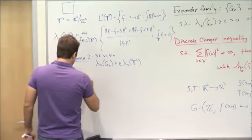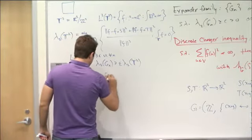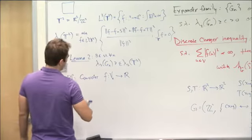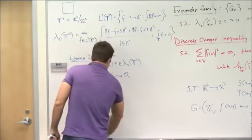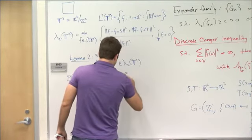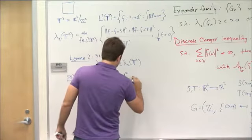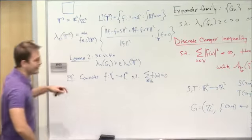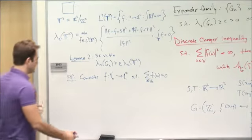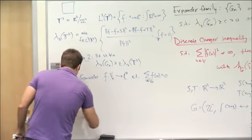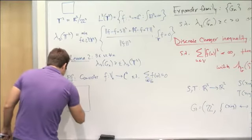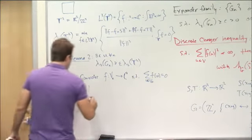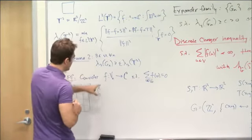Take any function from the vertex set of G_n to the real line such that the sum equals zero. I just want to define an extension of this to the torus, in the simplest possible way. I think about my graph sitting inside the torus. Suppose I have some square with corners U1, U2, U3, U4 and some point Z in the middle — I want to define the extension to Z.